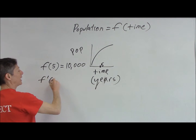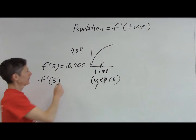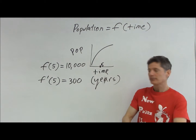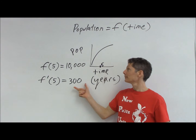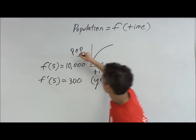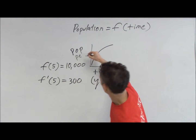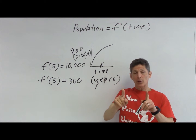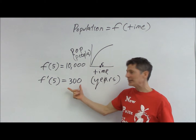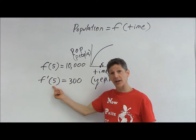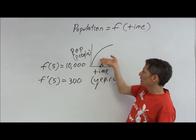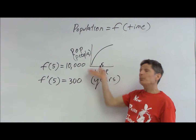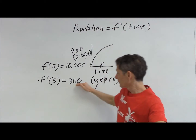We could then say f prime of five equals 300. At year five, the rate at which the population is growing is 300 people per year. The derivative is the slope — it's the slope at this x value. The 300 is my slope, measured in change in y (which is people) per change in time (measured in years). So it's 300 people per year at that moment in time. The derivative is the slope, or rate of change.